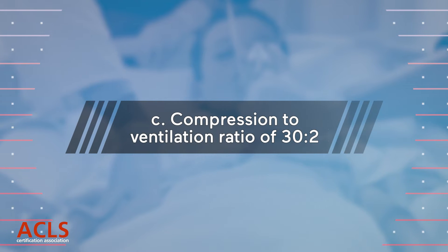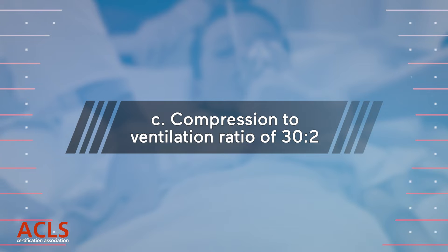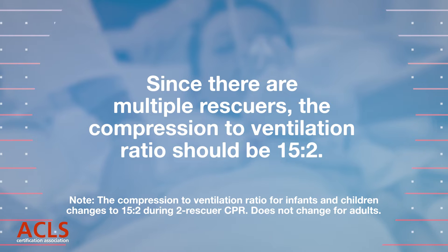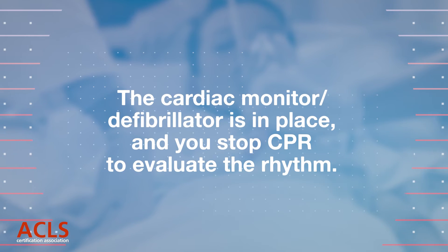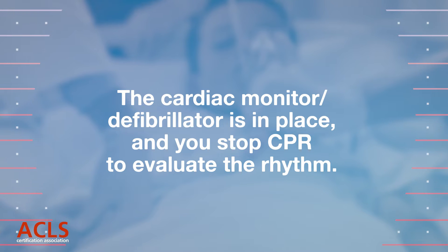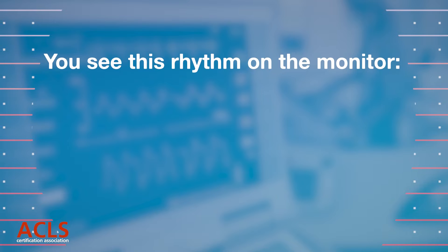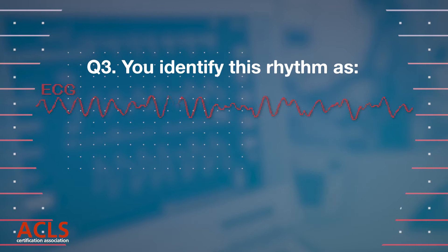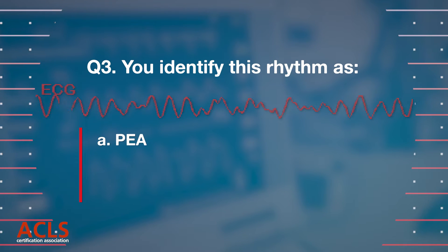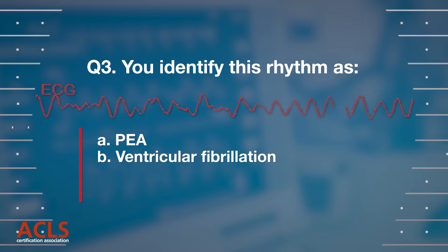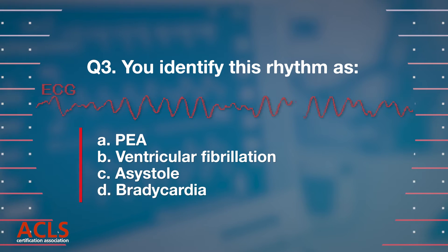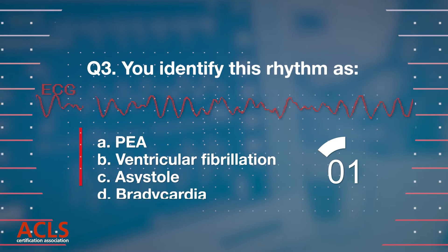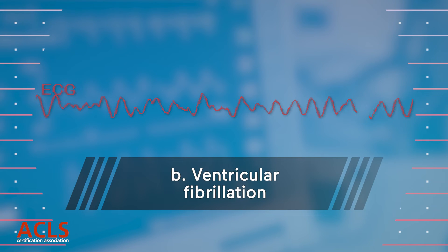Correct answer: C) Compression-to-ventilation ratio of 30:2. Since there are multiple rescuers, the compression-to-ventilation ratio should be 15:2. The cardiac monitor/defibrillator is in place and you stop CPR to evaluate the rhythm. Question 3: You identify this rhythm as: A) PEA, B) Ventricular fibrillation, C) Asystole, D) Bradycardia. Correct answer: B) Ventricular fibrillation.